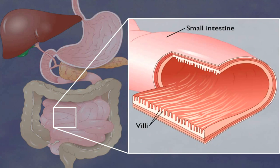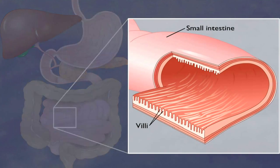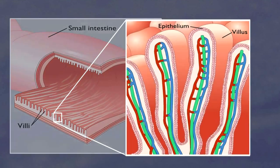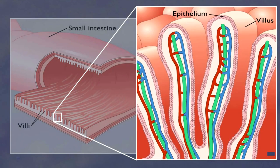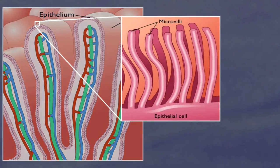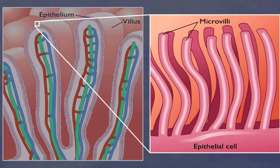An example of how enzymes function in the body is from the enzyme sucrase. Sucrase resides on the surface of the microvilli on the intestinal epithelial mucosal cell surfaces.